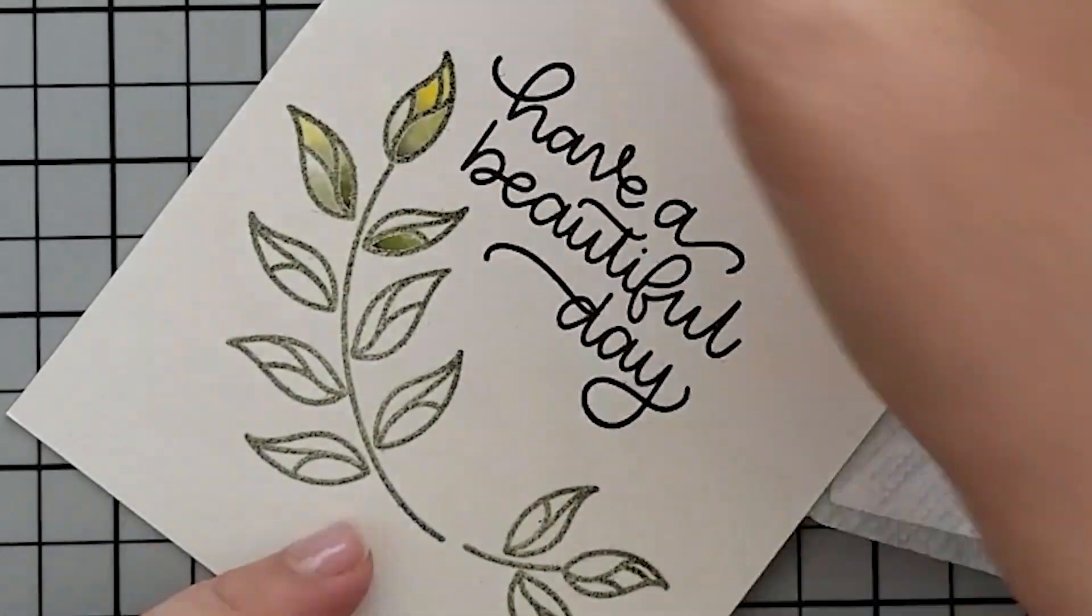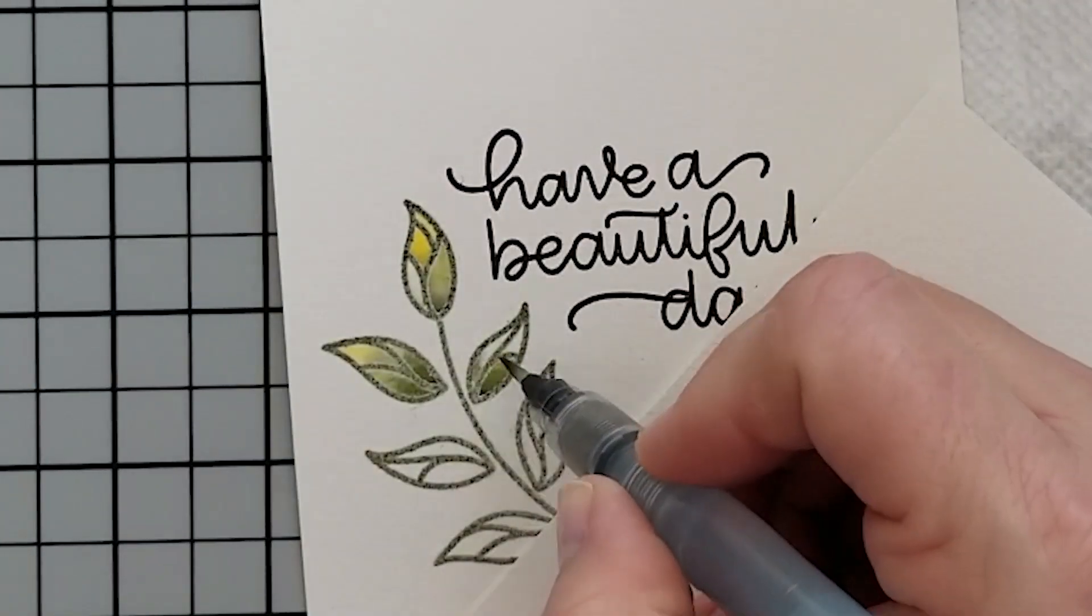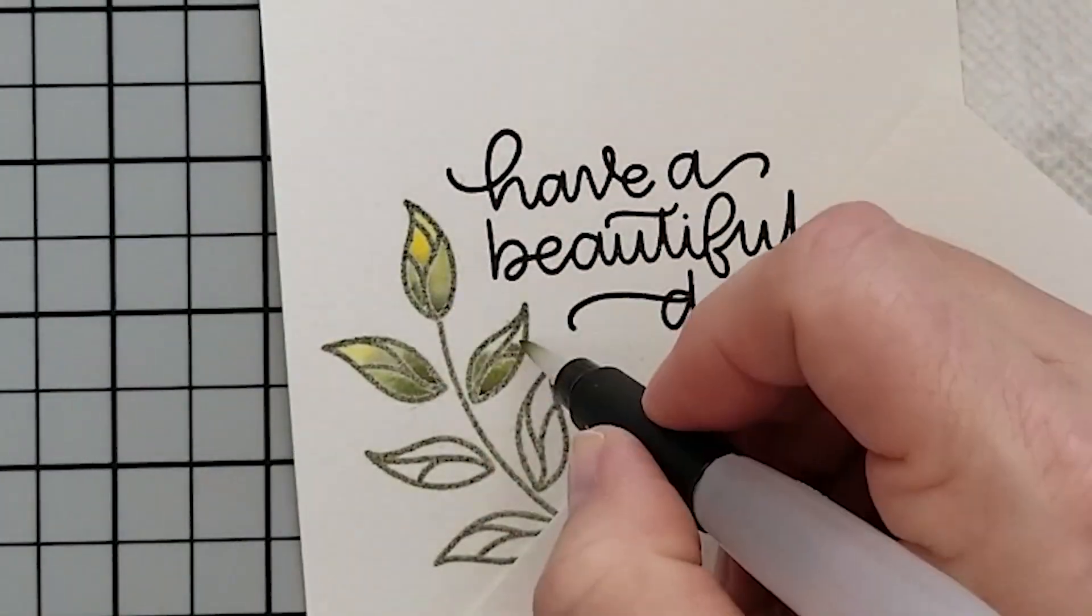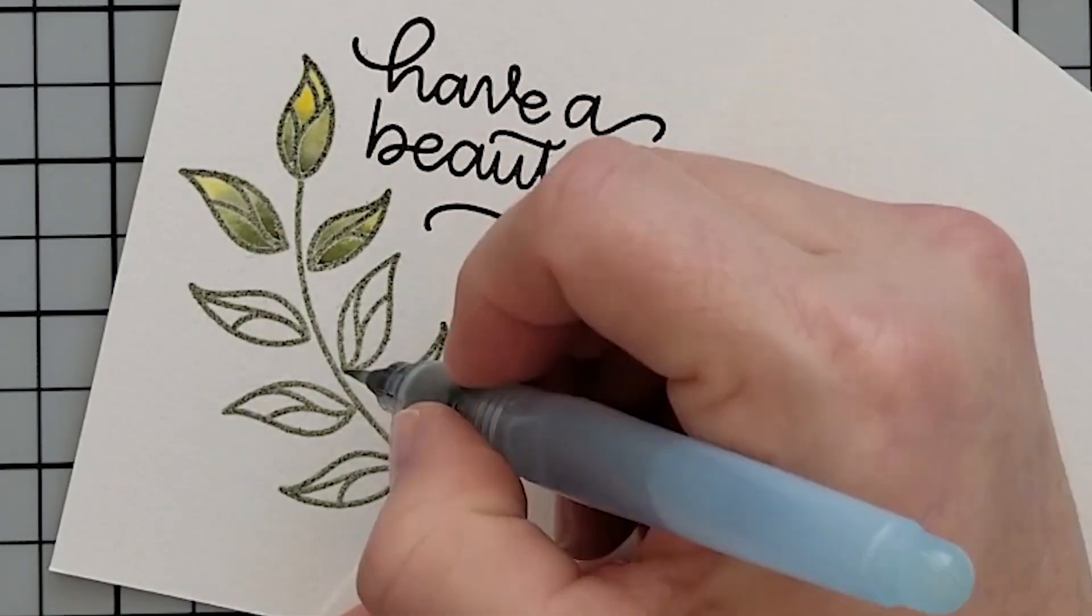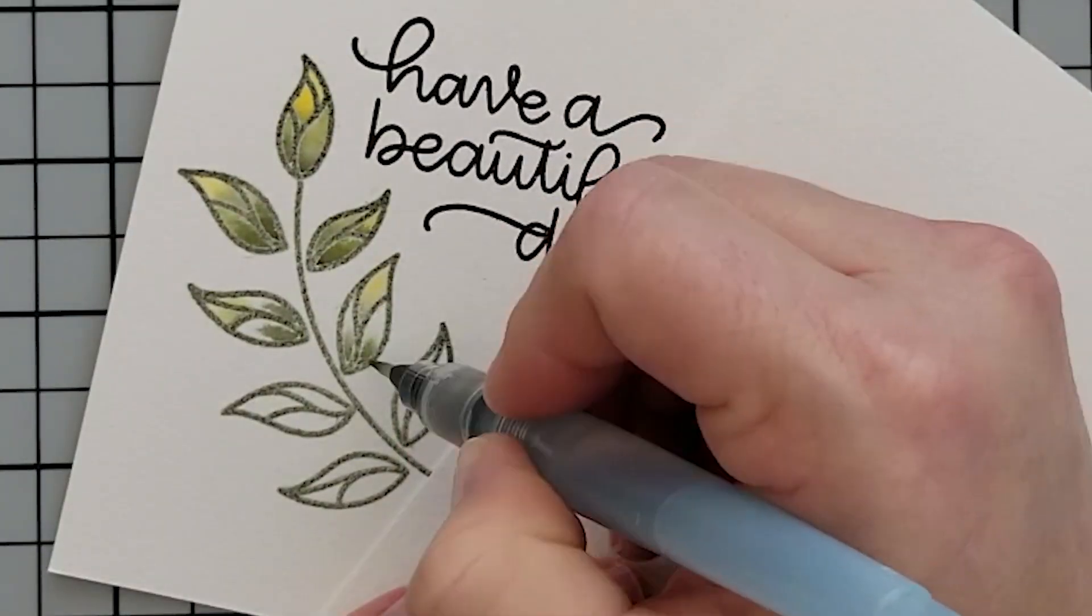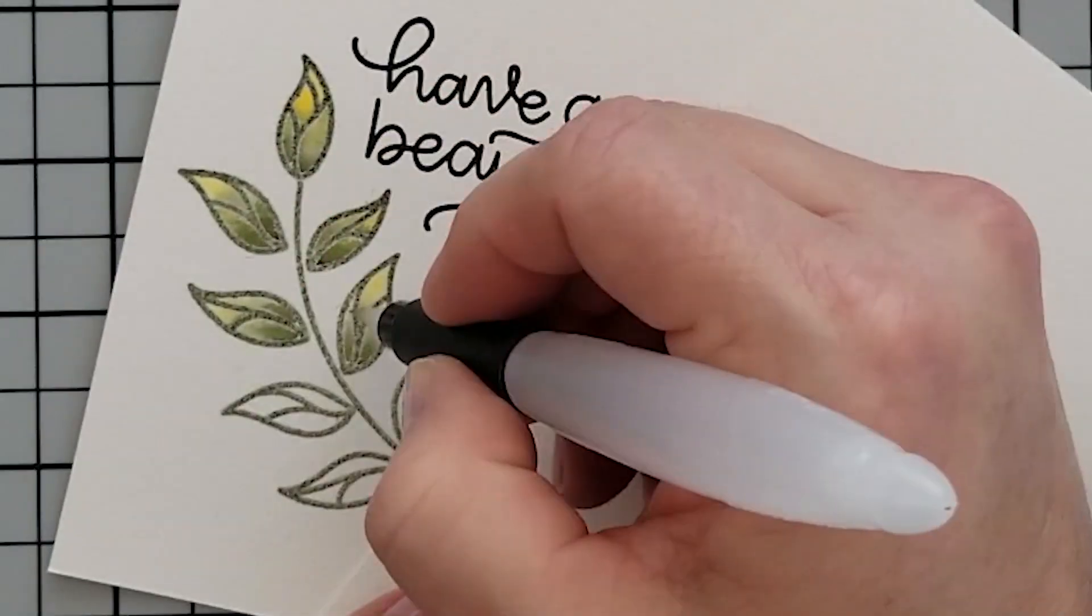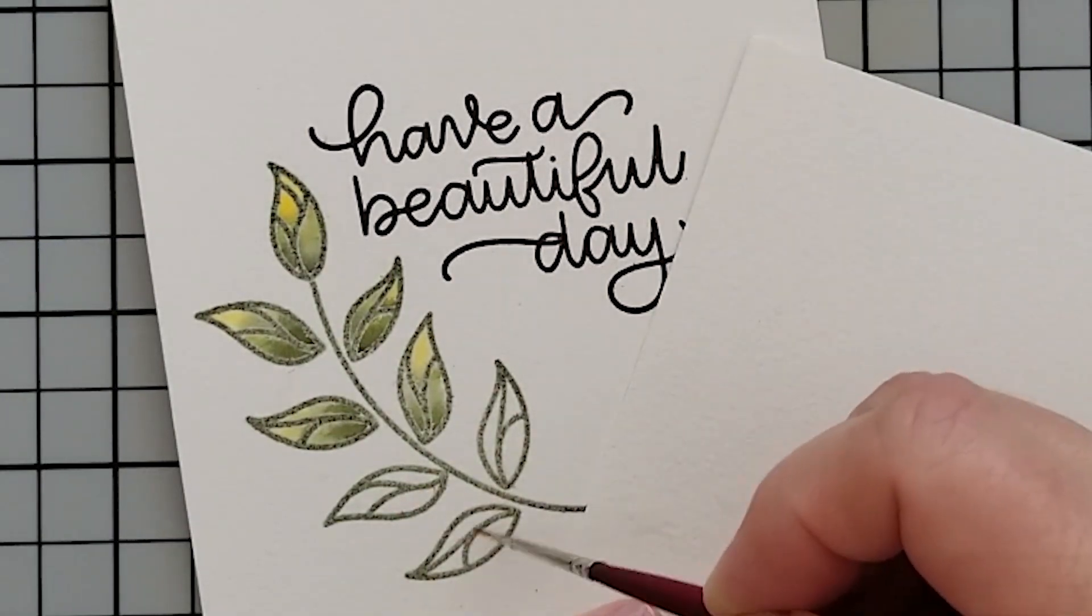So to watercolor our images, I've laid down ink directly onto my craft mat and I'm starting with the colors Dandelion, Pistachio, and Olive Grove. Now I'm going to come in and add some clean water to each leaf and then start laying down some color. So I've laid down a little bit of Dandelion on the tips.